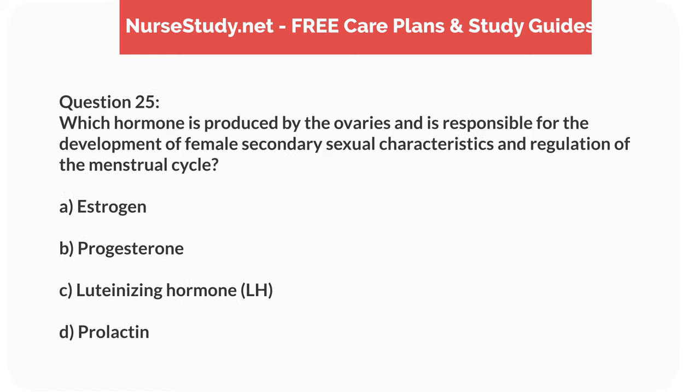Question 25. Which hormone is produced by the ovaries and is responsible for the development of female secondary sexual characteristics and regulation of the menstrual cycle? A. Estrogen. B. Progesterone. C. Luteinizing hormone (LH). D. Prolactin.